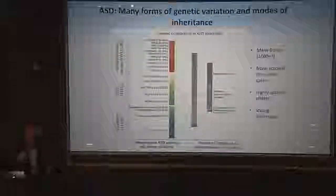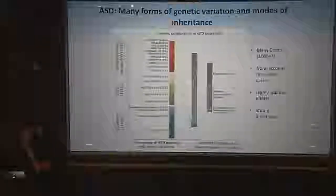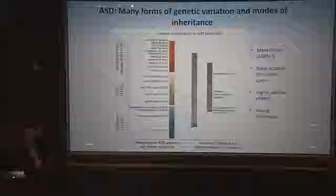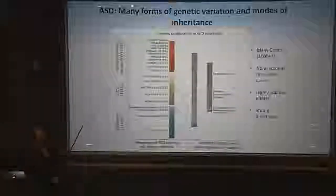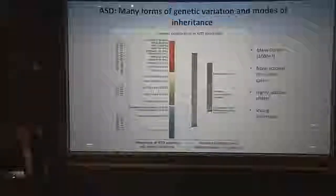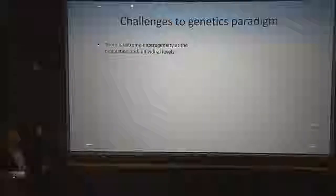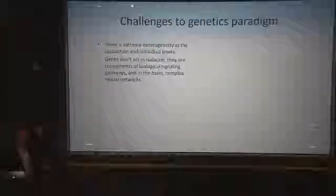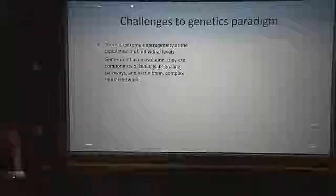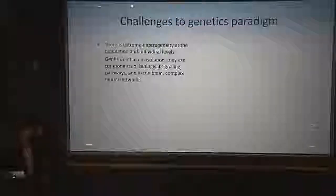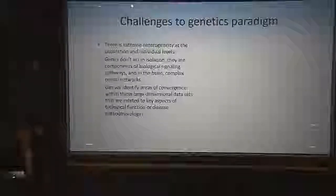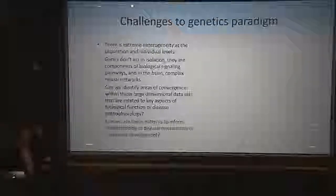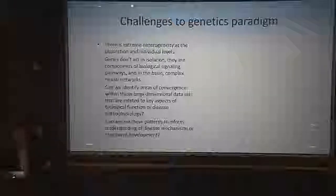There's strong pleiotropy, meaning these are not 'autism genes' per se. These genes disrupt brain development and brain functioning, imparting risk for these disorders, but it's not a one-to-one correspondence — many of these mutations cause severe intellectual disability or epilepsy with and without autism, and some contribute to schizophrenia. The challenges to the genetics paradigm include extreme heterogeneity, genes acting in biological signaling pathways, and neural networks. The question is: can we identify areas of convergence at the molecular pathway, circuit, or brain region level?